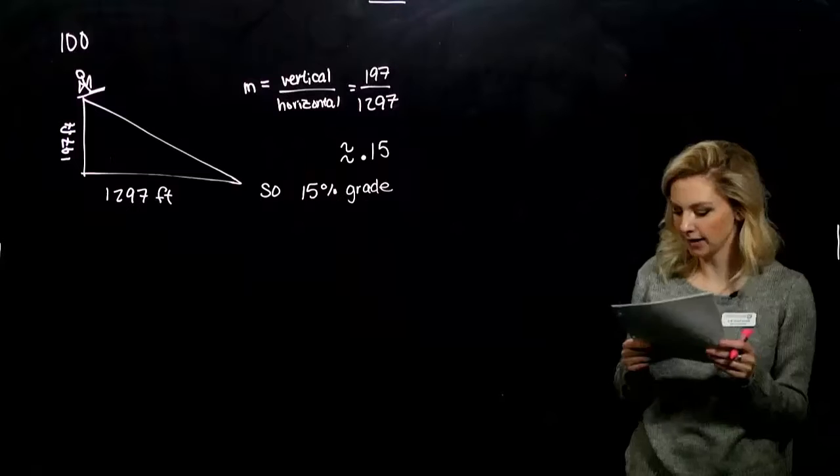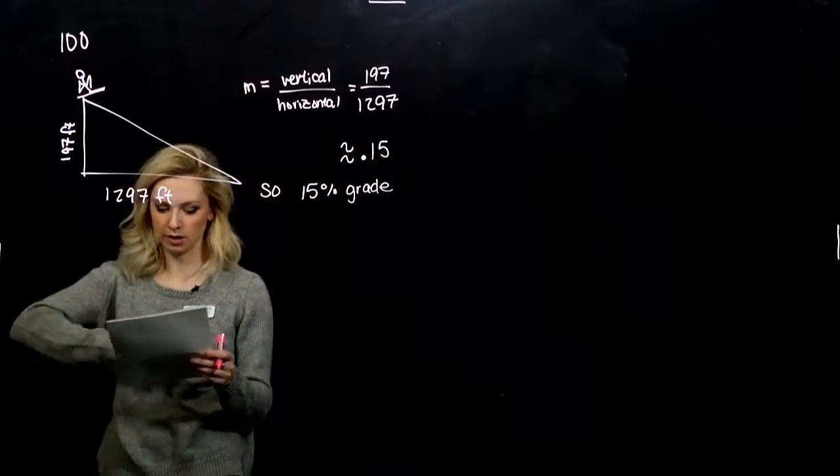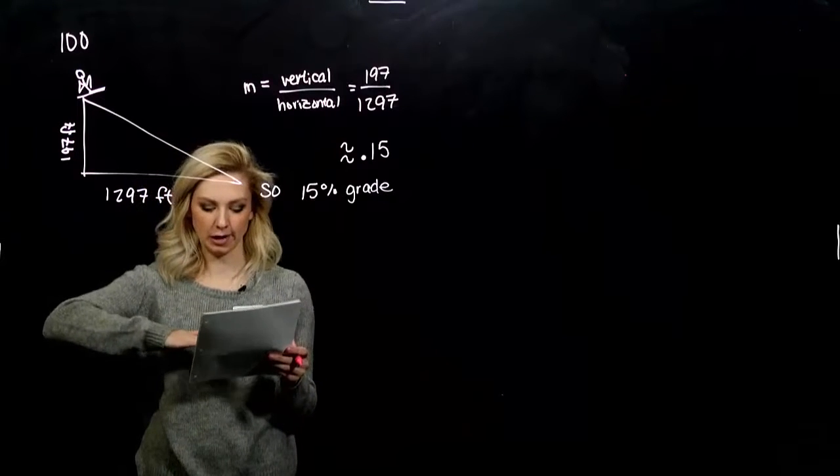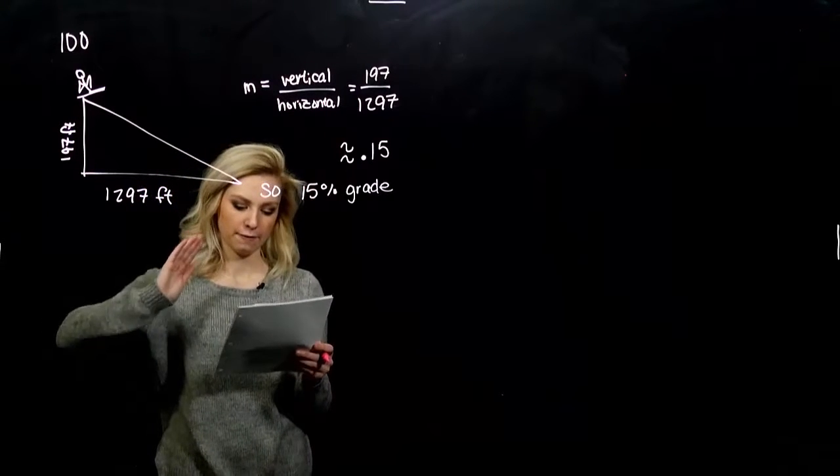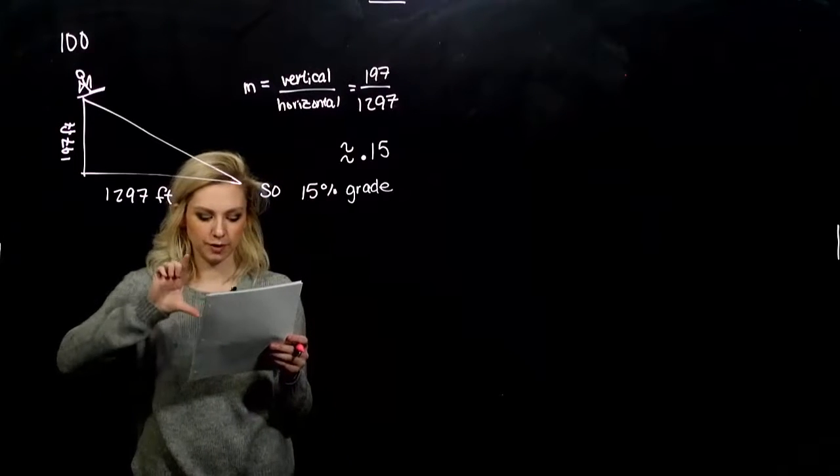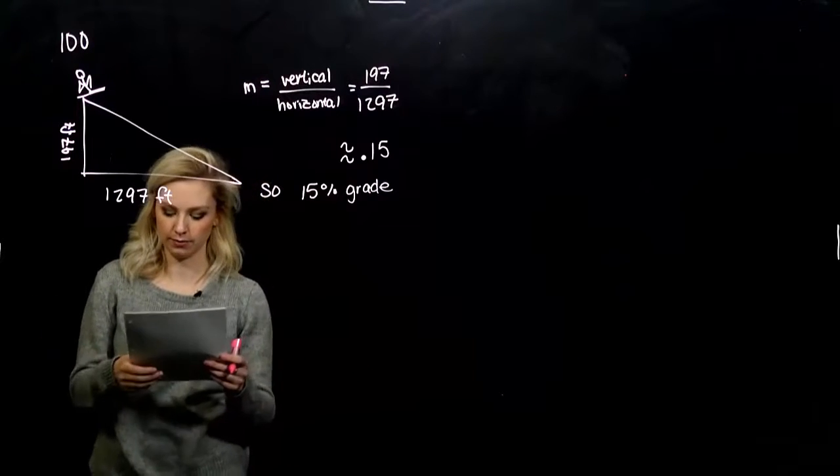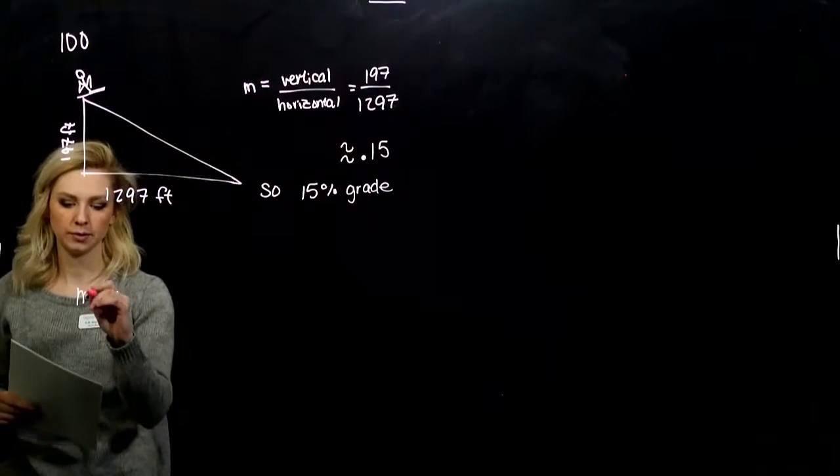So one for you to try. During a stress test, a physician can change the grade or slope of a treadmill to measure its effect on heart rate. Steeper, higher heart rate. Find the grade of the treadmill shown below. So vertical distance, 0.4 feet. Horizontal, 5 if you don't have it in front of you. So what are we looking at?